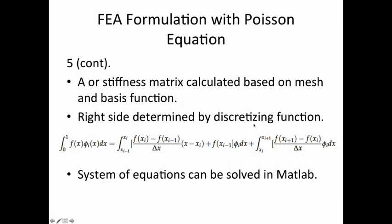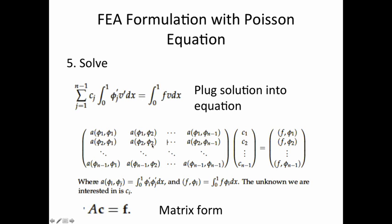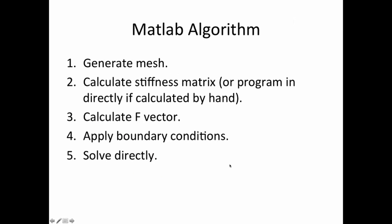The A matrix is called the stiffness matrix and is calculated based on the mesh and basis function. The right side is determined by discretizing the functions. Once we have a system of equations, this can be solved in MATLAB. The basic MATLAB steps are: generate your mesh, calculate the stiffness matrix, calculate the F vector, apply boundary conditions, and then solve directly.